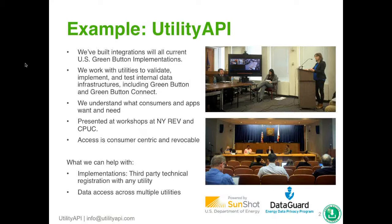With Green Button Connect, third parties are able to connect directly with the utility, so when a customer — a homeowner or a business — authorizes that third party, they receive the data directly from the utility. To build those connections, a third party must go to each individual utility and request to become an authorized third party, and the processes differ for each utility. What we've done is handle that for our customers, making Utility API a universal platform across all the different data implementations, so solar companies, energy efficiency companies, and property management companies can access data through one interface instead of going to each utility individually.